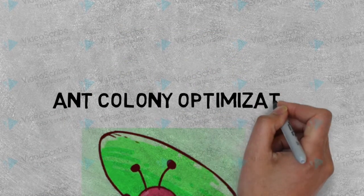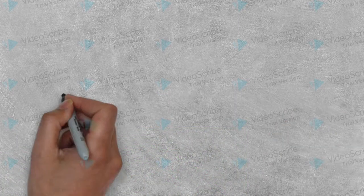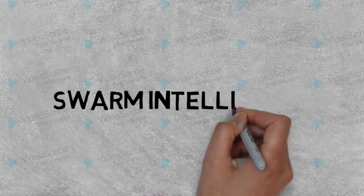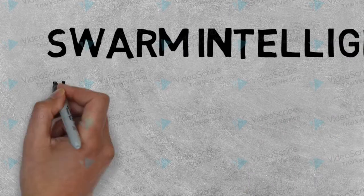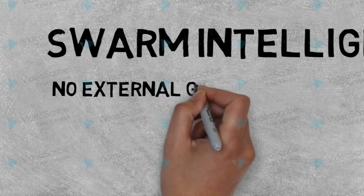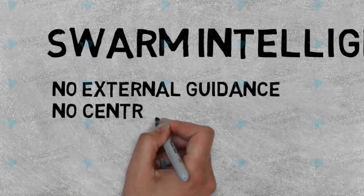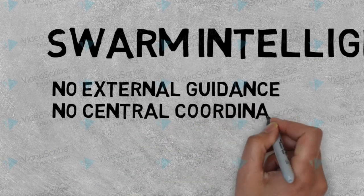But first, let's start with swarm intelligence. Ant colonies exhibit what we call swarm intelligence, in which a collective system is capable of accomplishing difficult tasks in dynamic and varied environments without any external guidance or control, and no central coordination.